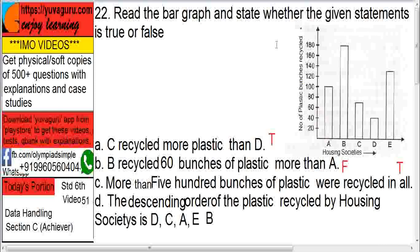Statement D: The descending order of the plastic recycled by the housing society is D, C, A, E, B. Descending means greatest to lowest. D is lowest, then C second highest, A highest, E higher, and B is highest. This given order is ascending order, it's not descending, so this sentence is false. If the question would have been the ascending order, then it would have been true.